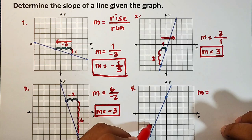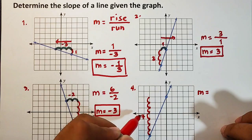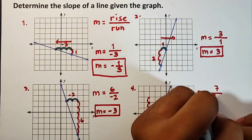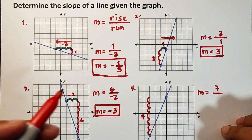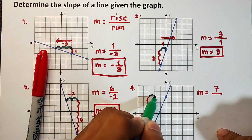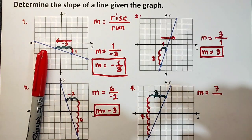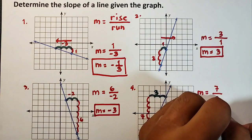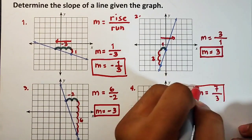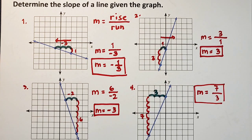For number four, counting the rise from this point: one, two, three, four, five, six, seven — rise equals seven. For the run, counting from this point: one, two, three — run equals three. So m equals seven over three, and we have a positive slope. I hope you now understand how to calculate the slope when the graph is given.